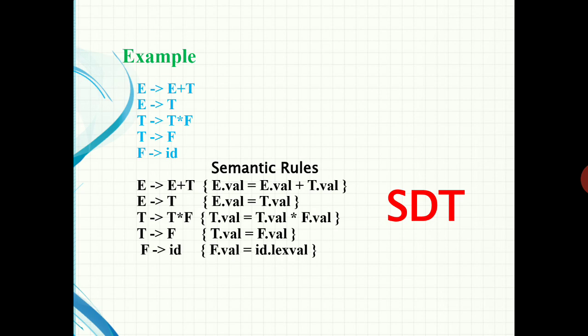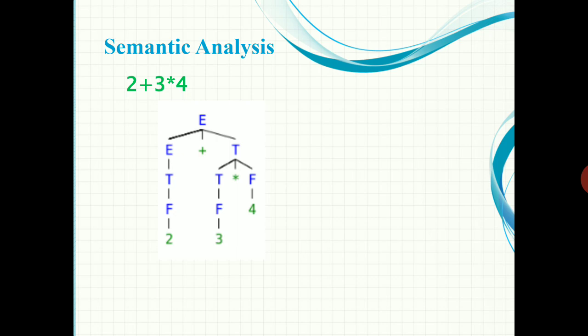The idea of syntax-directed translation is to construct a parse tree or syntax tree and compute the value of attributes at each node of the tree by visiting them in some order. Consider the expression 2 + 3 * 4. To semantically evaluate this expression, we first create the parse tree. We apply the rule E → E + T, and then E → T, T → F, so the value of F becomes 2.